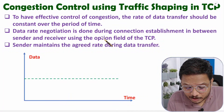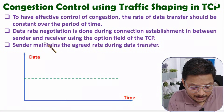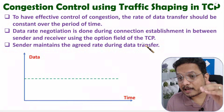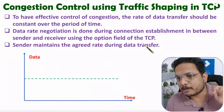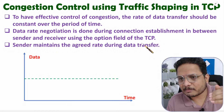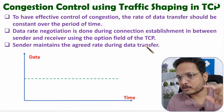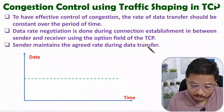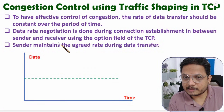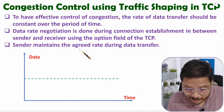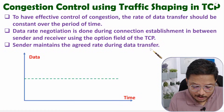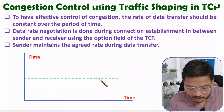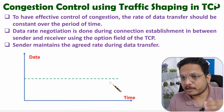Data rate negotiation is done during connection establishment between sender and receiver using the option field of TCP. Here we define what the data rate should be between sender and receiver during TCP connection establishment. I've already explained how connection establishment, data transfer, and connection termination happen in TCP. In the option field of the TCP header we define the data rate. The sender maintains the agreed data rate during data transfer, shaping traffic so that data rate is constant over time.